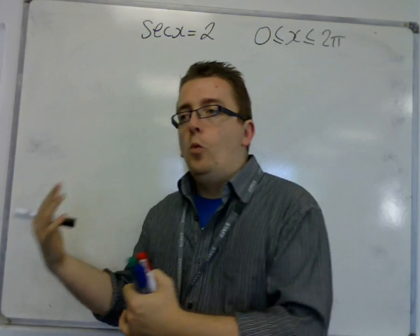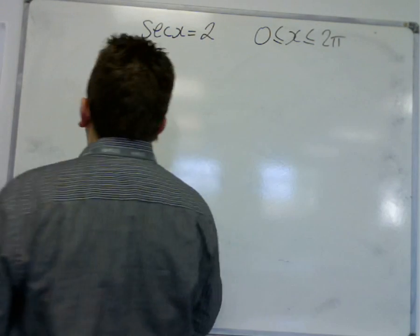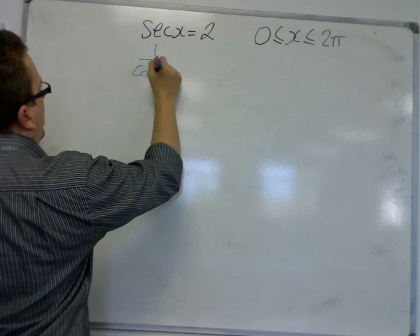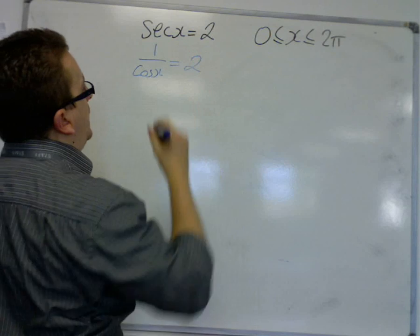Sec x is equal to 1 over cos x. So knowing that, we could say that 1 over cos x must therefore be equal to 2.